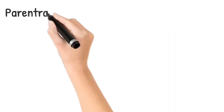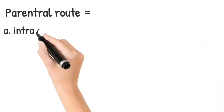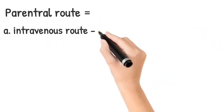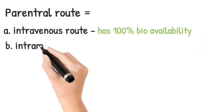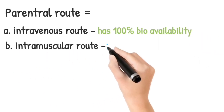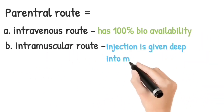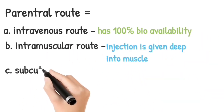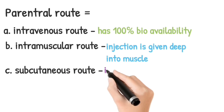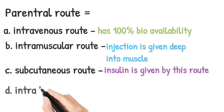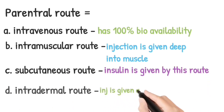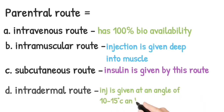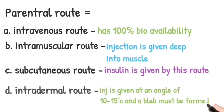Parenteral routes. The first one is intravenous route, which has 100% bioavailability. Intramuscular route: injection is given deep down into the muscle. Subcutaneous route: insulin is given by this route. Intradermal route: injection is given at an angle of 10 to 15 degrees and a bleb must be formed.